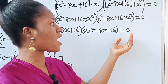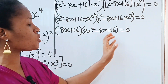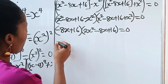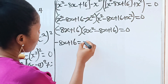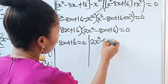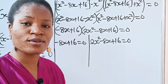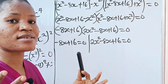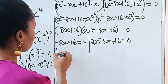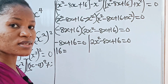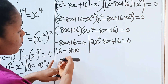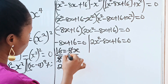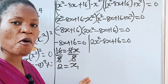We now have two brackets equated to 0, so we equate each bracket to 0. That gives us minus 8x plus 16 equals 0, and 2x squared minus 8x plus 16 equals 0. From the first equation, transferring gives us 16 equals 8x. Dividing both sides by 8, we get x equals 2. This is the first value of x.